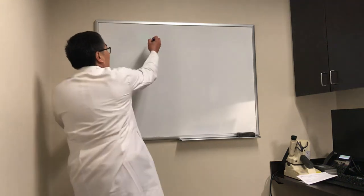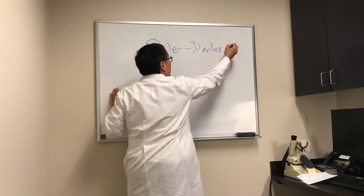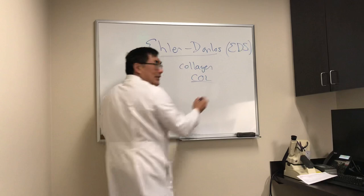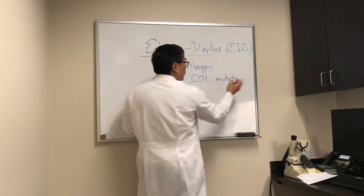Today we're going to be talking about Ehlers-Danlos Syndrome, EDS. Ehlers-Danlos Syndrome is an inherited collagen disorder, and there are different collagen mutations that produce the various types. As an ophthalmologist, you should be aware of some of the different Ehlers-Danlos types because the types make a difference.